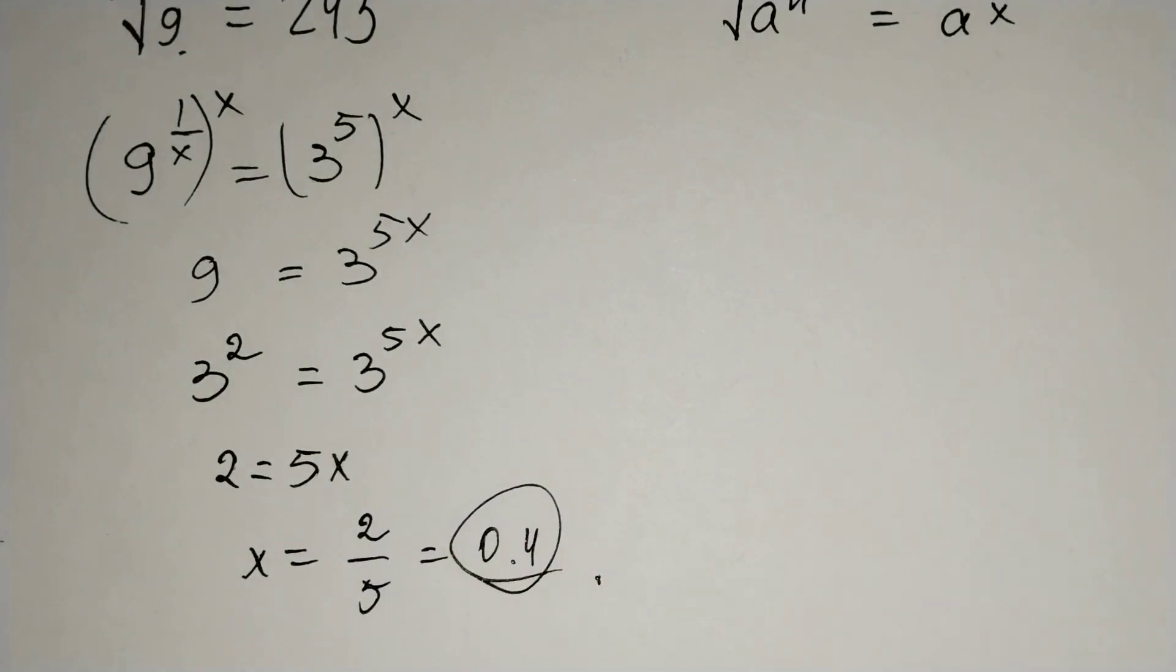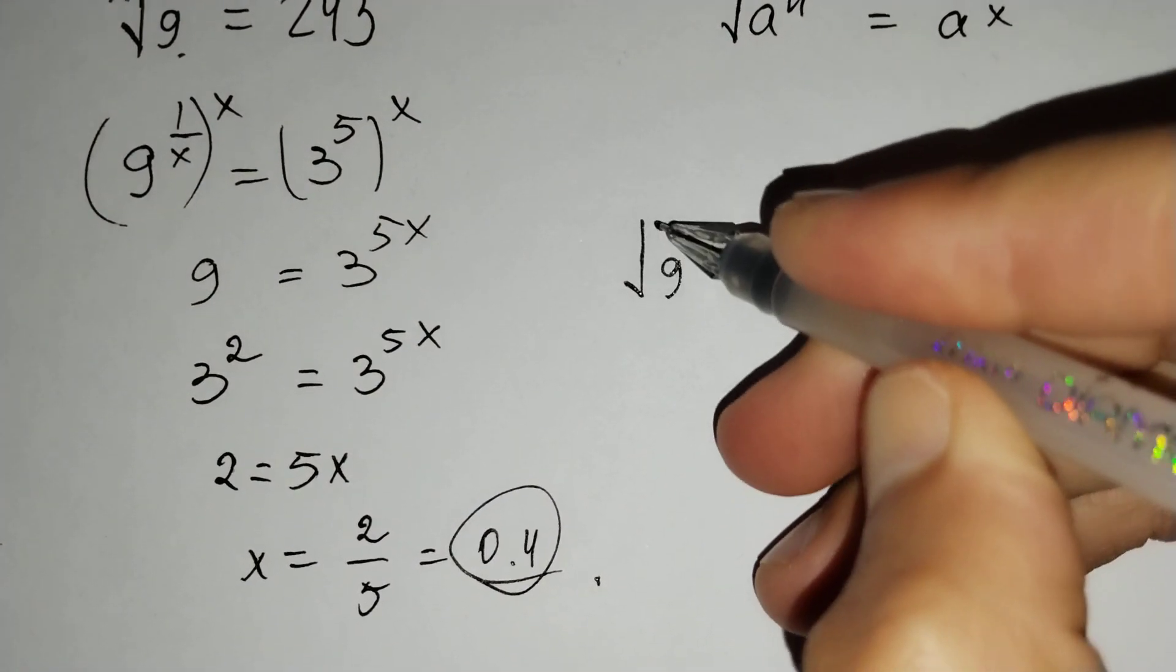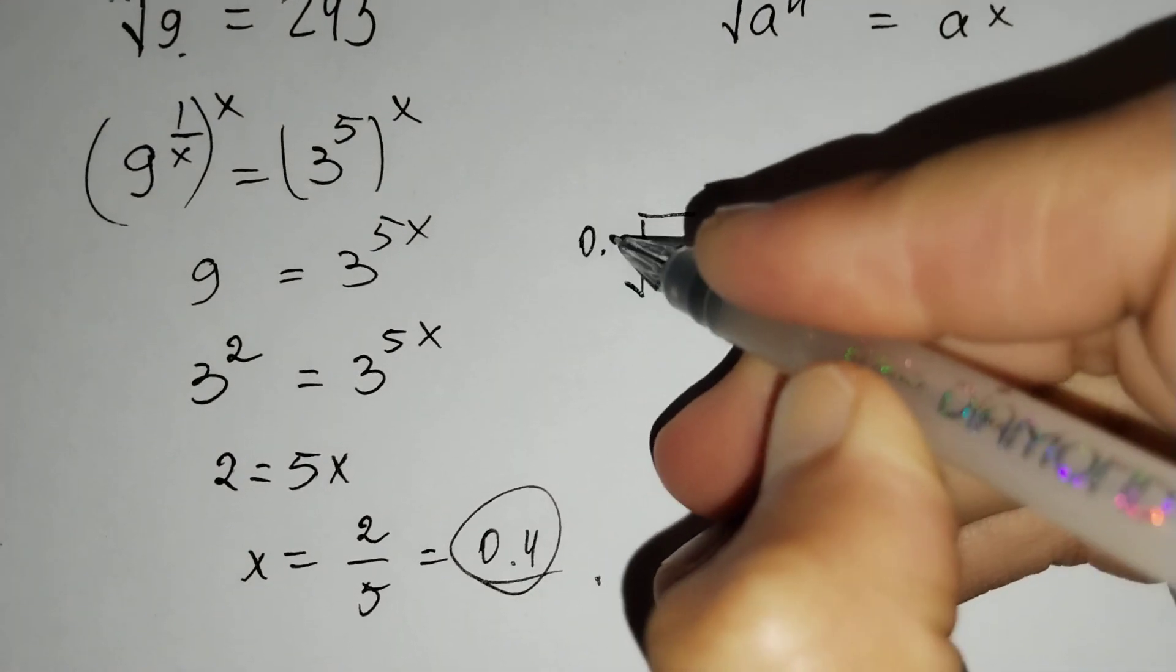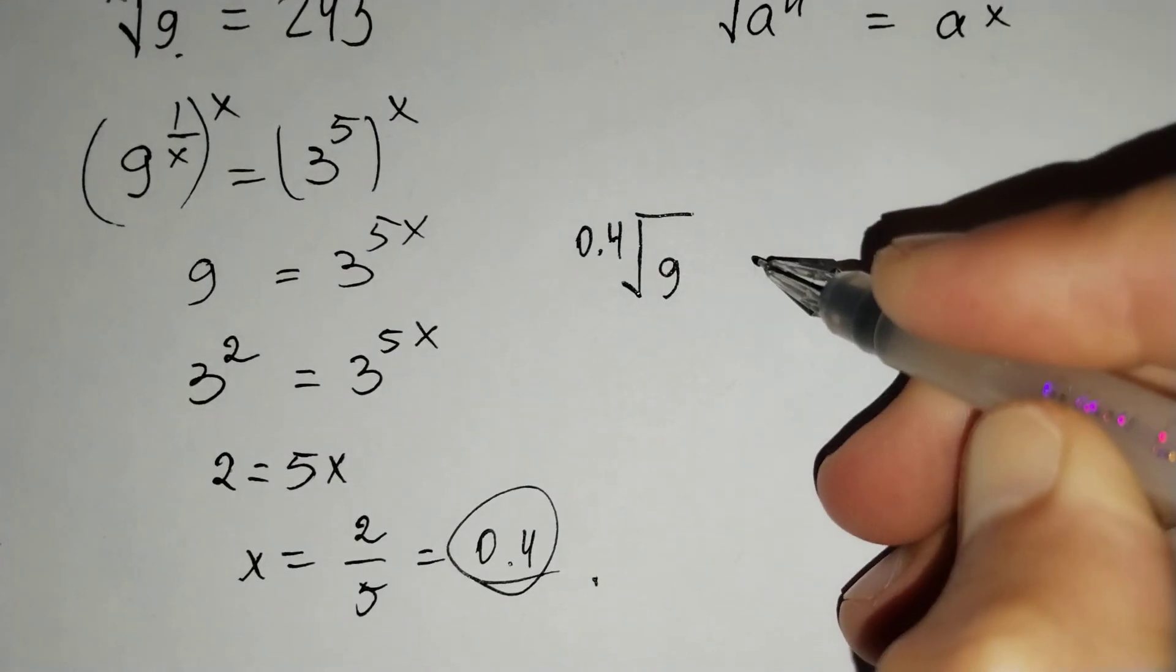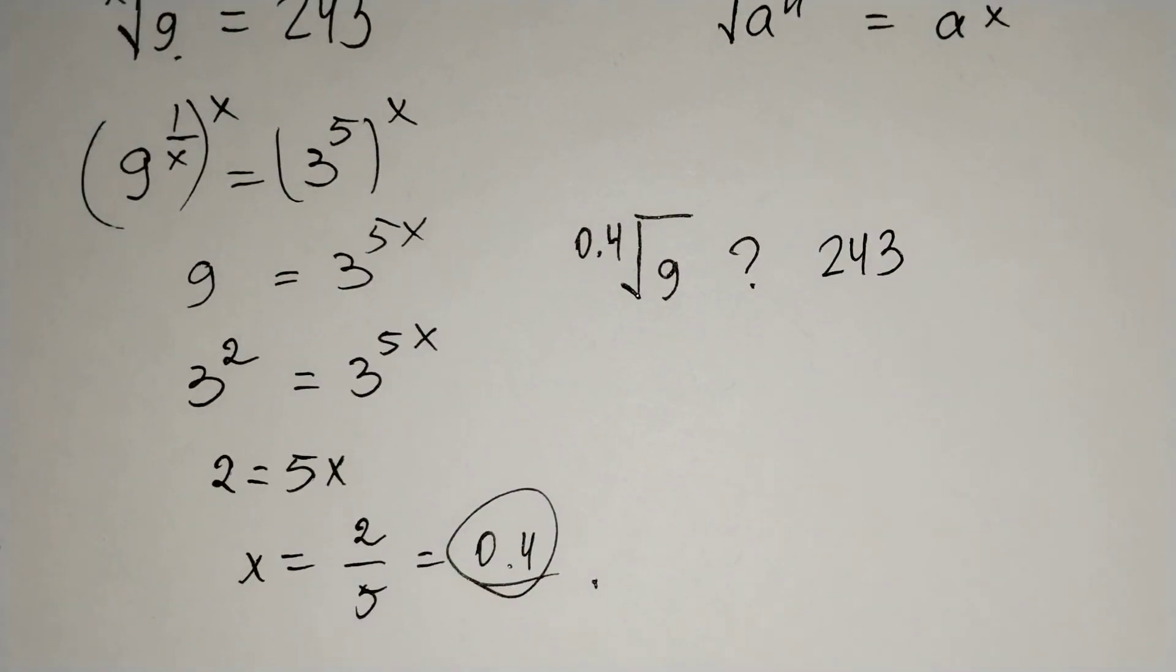Now, let's check it. Is the root of 9 from 0.4 degree equal to 243 or no? Is it true or no?